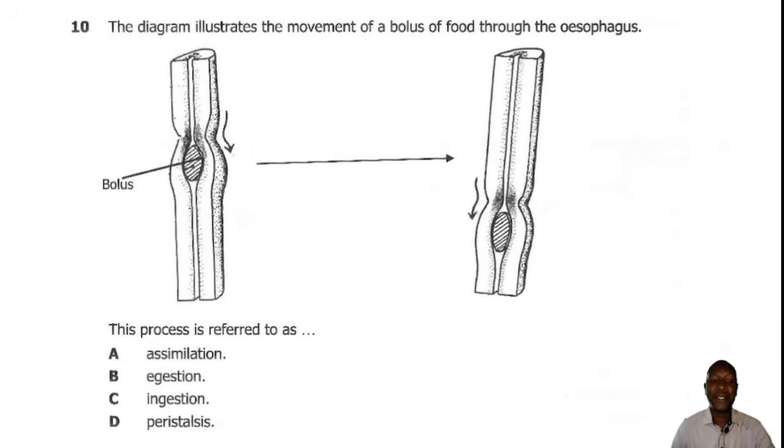Question 10. The diagram illustrates the movement of the bolus of food through the esophagus. This process is referred to as... The movement of the bolus in the esophagus moves by contraction of circular and the longitudinal muscles which creates what is known as peristalsis. So the correct answer is D.